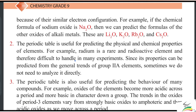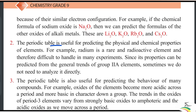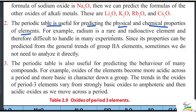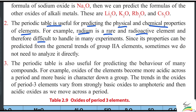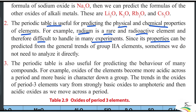The periodic table is also useful for predicting the physical and chemical properties of elements, although the elements can be very different. For example, radium is a rare and radioactive element and therefore difficult to handle in many experiments. Radium is radioactive and rare.